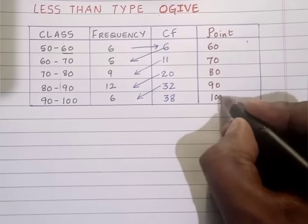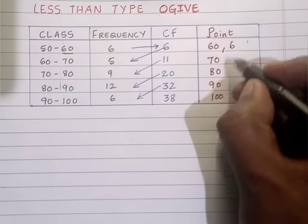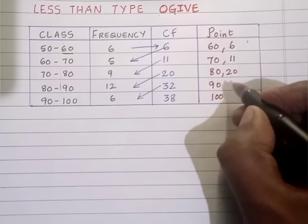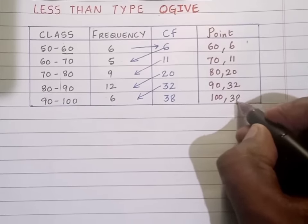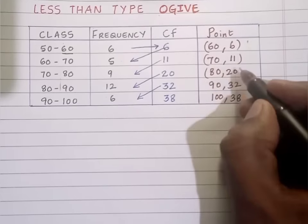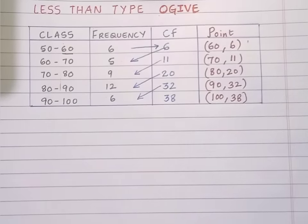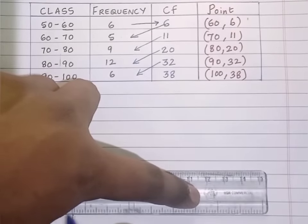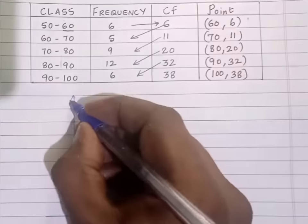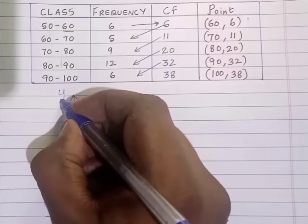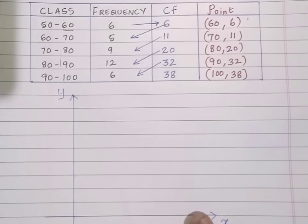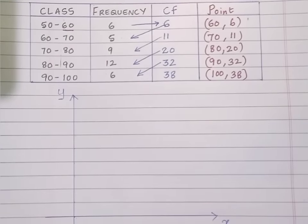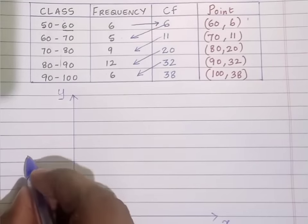I will write down all the upper limits plotted against the cumulative frequency: 6, 11, 20, 32, 38. On the X-axis, I should plot the upper limits; on the Y-axis, the cumulative frequency. Now let me draw the X-axis and Y-axis. On the X-axis it is upper limits; on the Y-axis it is cumulative frequency.